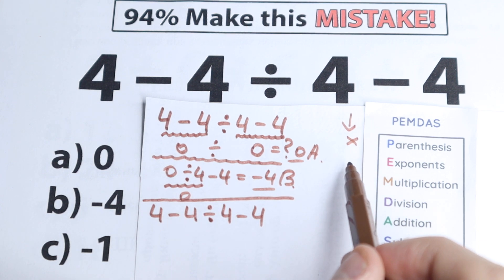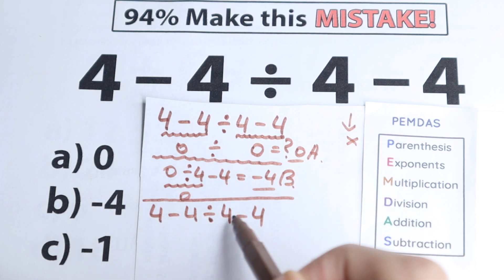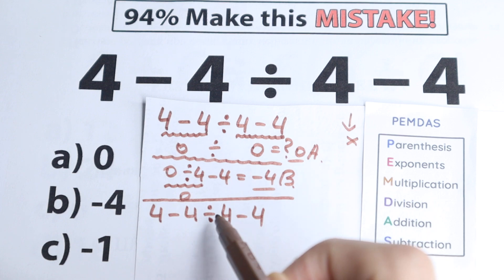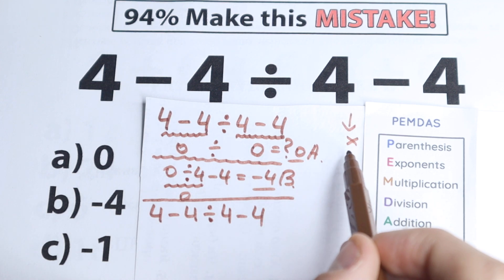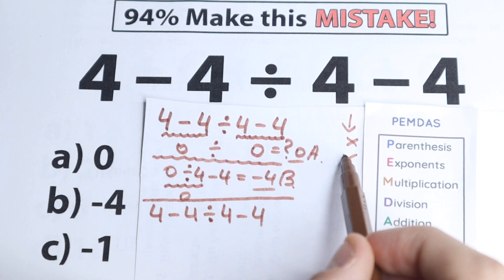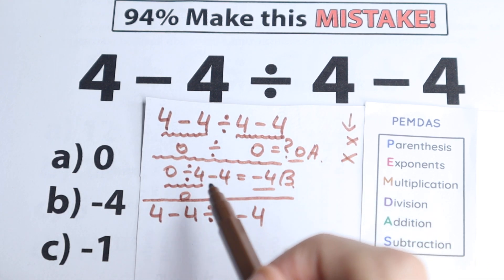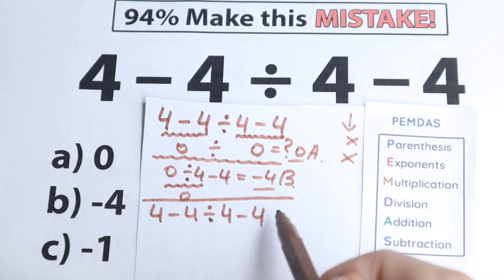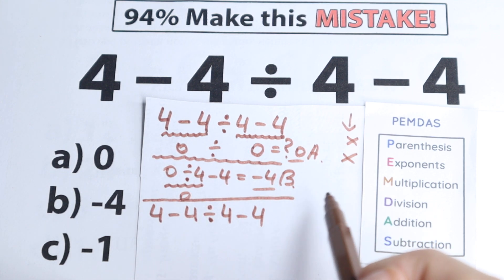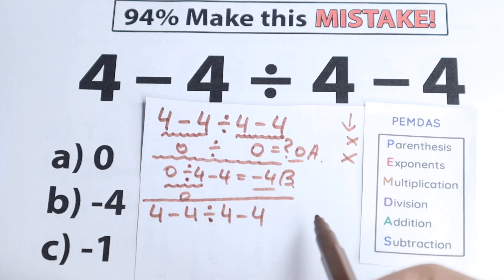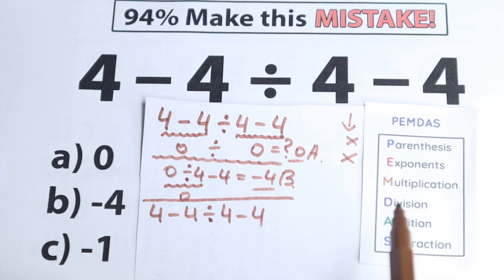What about Exponents? I don't see any squares or cubes here, no large powers. That's actually great, because with exponents the question would be more complicated and harder to solve — for example, imagine 4 to the power 10. But we don't have that, so we skip this step as well.